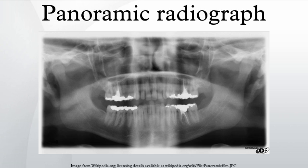Dental panoramic radiography equipment consists of a horizontal rotating arm which holds an X-ray source and a moving film mechanism arranged at opposed extremities. The patient's skull sits between the X-ray generator and the film. The X-ray source is collimated towards the film to give a beam shaped as a vertical blade having a width of 4–7 mm when arriving on the film after crossing the patient's skull. The height of that beam covers the mandibles and the maxilla regions.